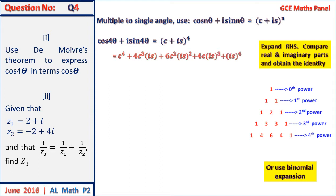When we expand we have cos to the power 4 plus i·4cos³θ·sinθ minus 6cos²θ·sin²θ minus i·4cosθ·sin³θ plus sin⁴θ.